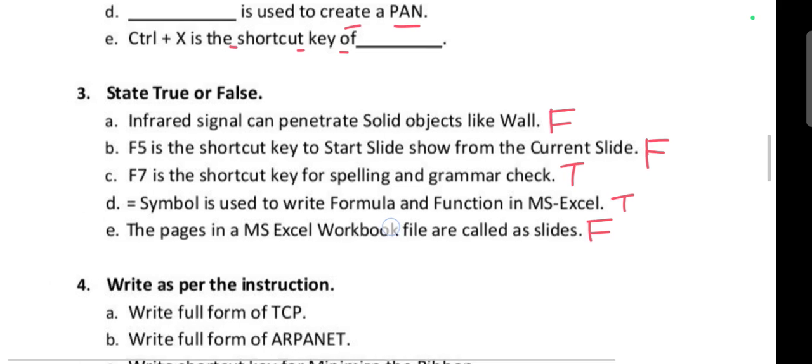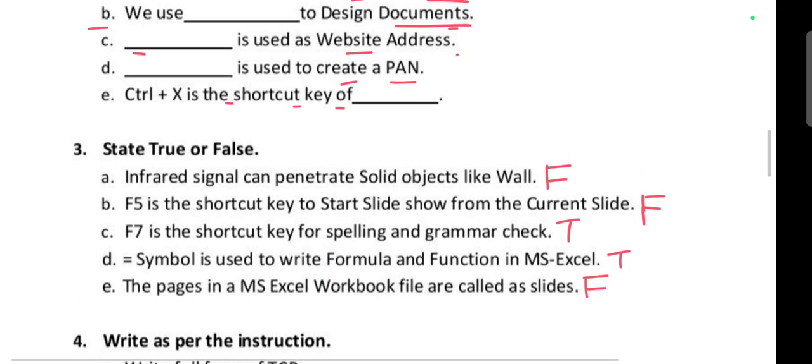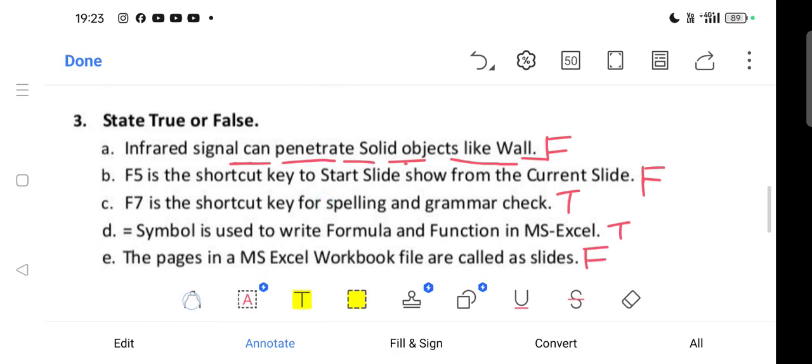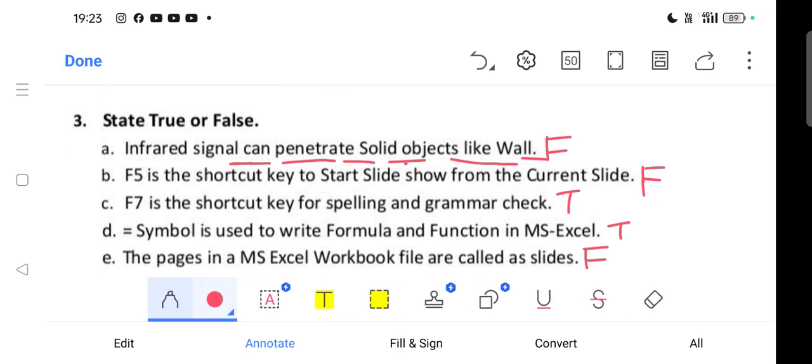We will discuss question number 3. The question is: State True or False. Part A: Infrared signal can penetrate solid objects like wall. Can infrared signal penetrate? No, it cannot. This is false.